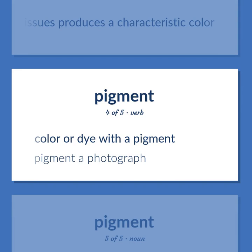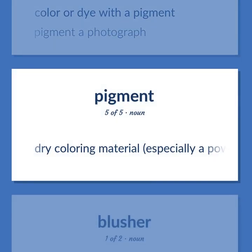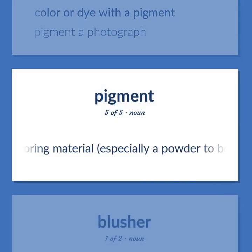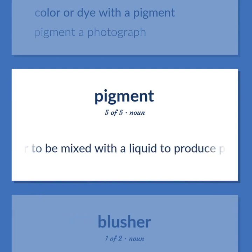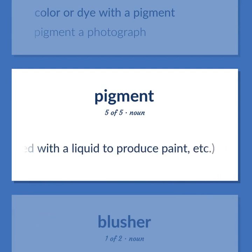Color or dye with a pigment. Pigment a photograph. Dry coloring material, especially a powder to be mixed with a liquid to produce paint, etc.